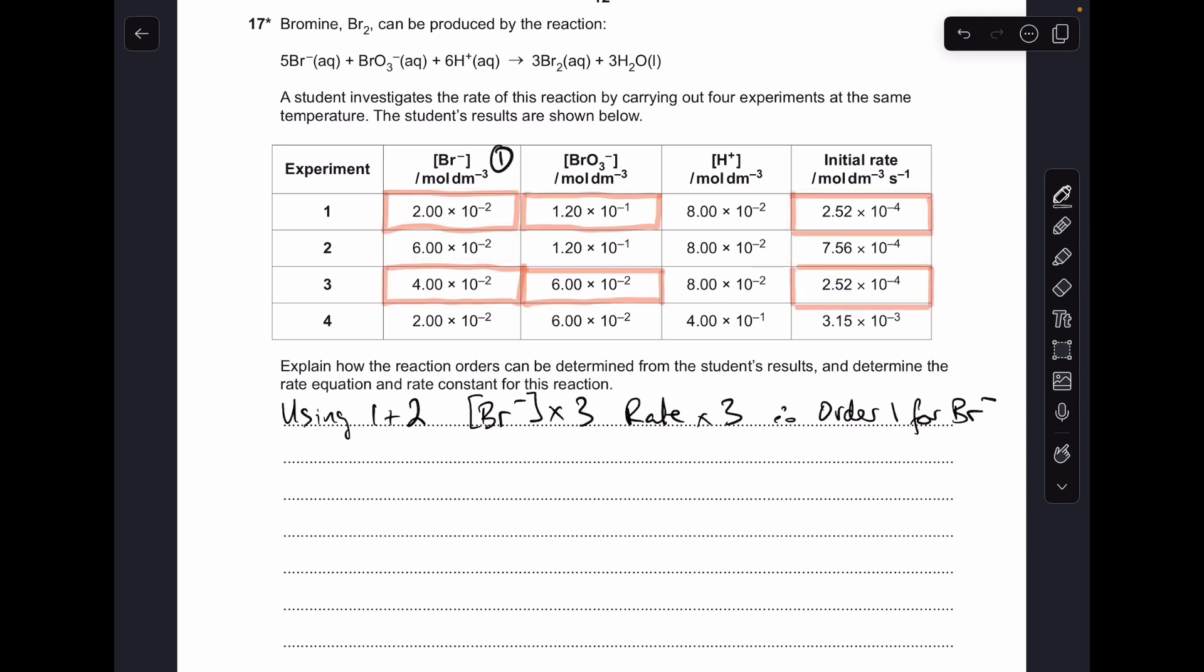So moving on to the BrO3- ion, you can see I've highlighted the information for experiments one and three, and the reason I've chosen those is because the H+ concentration isn't changing. So there's the information summarized there: using one and three, the bromide ion concentration has doubled, BrO3- concentration has halved, the rate has stayed the same, effectively multiplied by one.